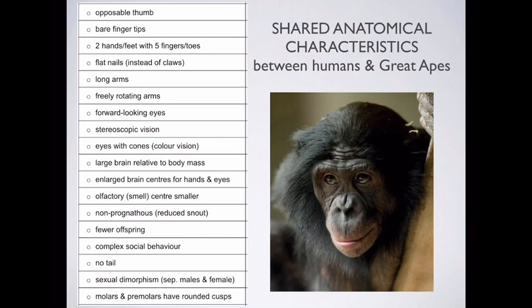Our eyes look forwards. Now that is something we share actually with all predators, not just with the great apes — cats, dogs, and other predators have their eyes at the front of their skull, not on the sides. We have stereoscopic or binocular vision, which is what enables us to have 3D vision.